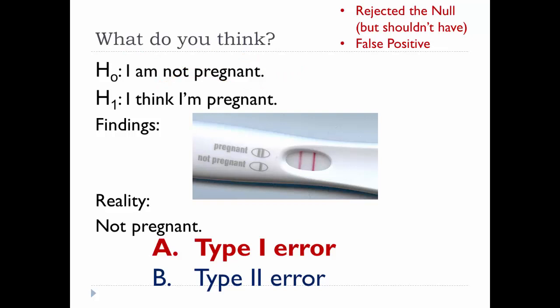While some might claim that in this case you might be safer to commit a Type 1 error versus a Type 2 error — because you might be more apt to take care of yourself believing you might be pregnant — in research, however, we would rather make the mistake of having a false negative than a false positive. So you might test and retest and retest, as well as hold off on making any announcements until you're fairly sure that you are indeed pregnant. Thus, Type 1 errors are considered to be more grievous than Type 2 errors.